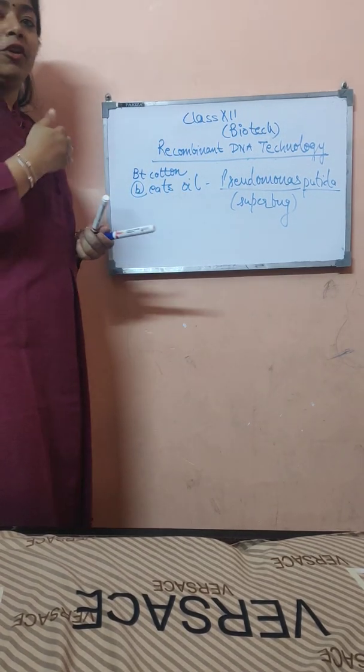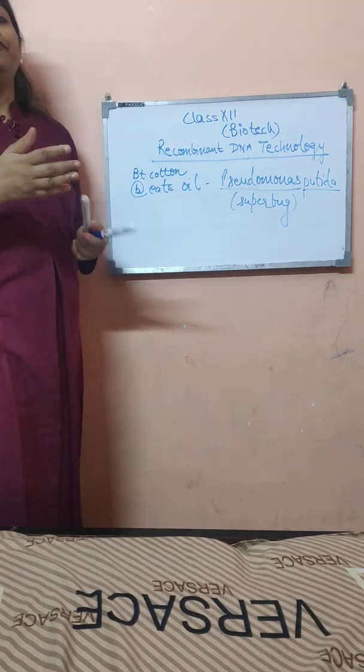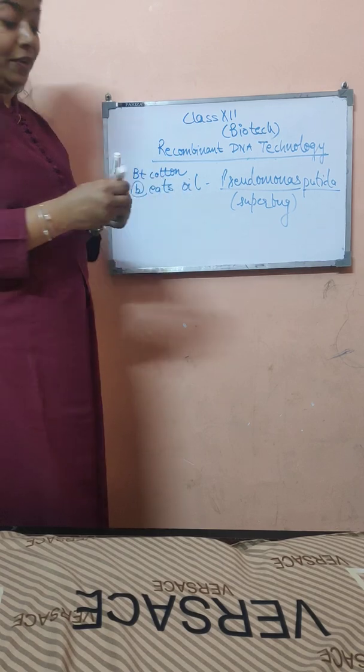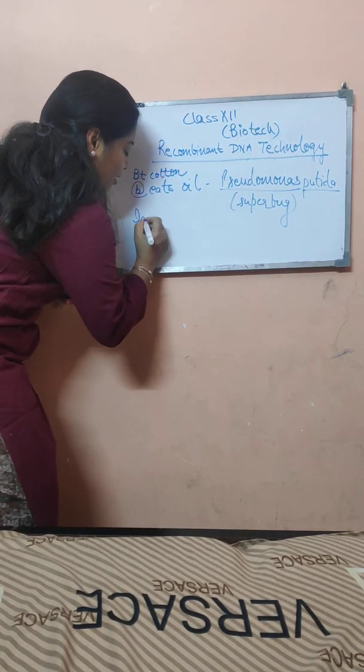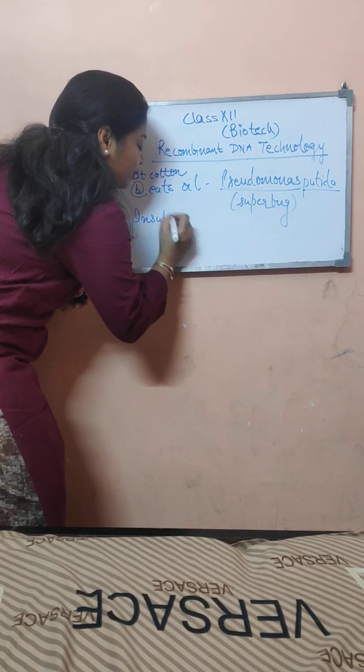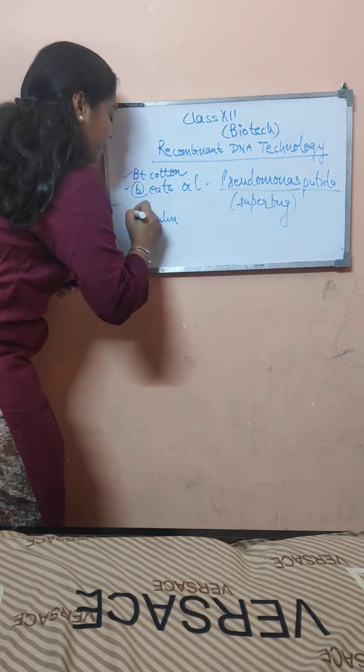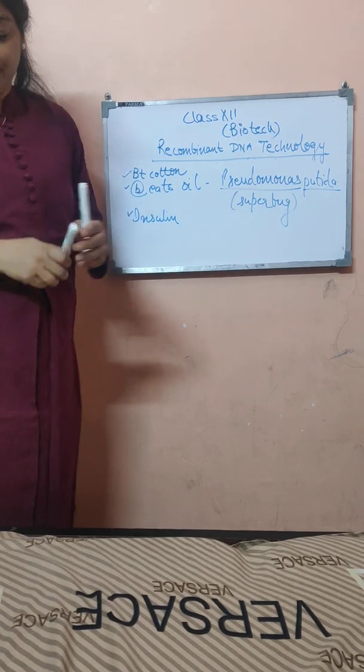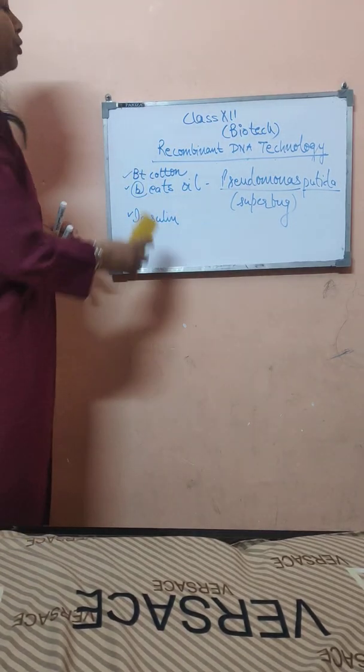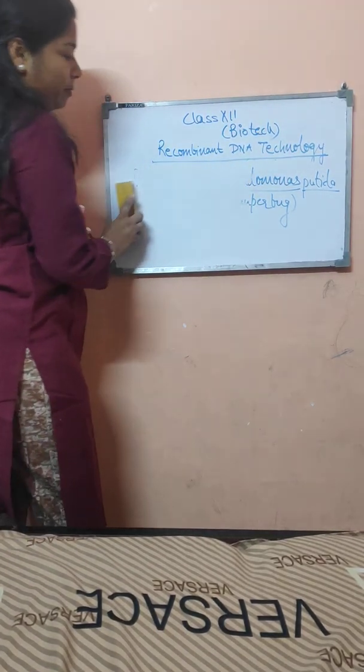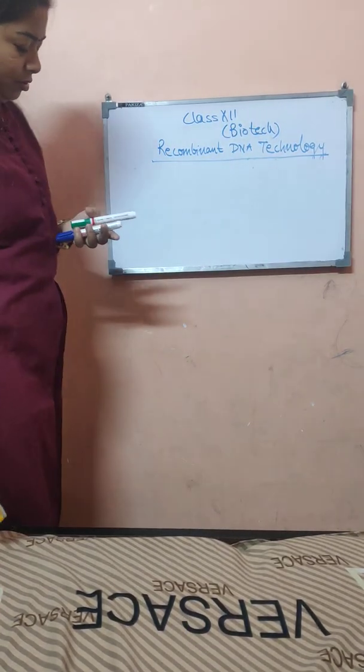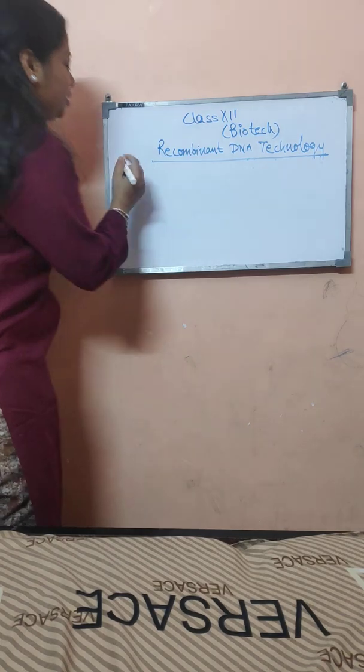Nowadays we have lot of benefits of recombinant DNA technology, such as the production of insulin. Now the question arises, these are the results but how did these results come into existence? And for this we should come to know about the steps of recombinant DNA technology.